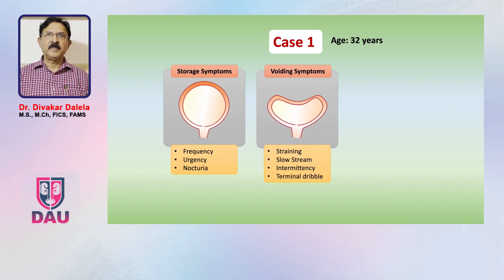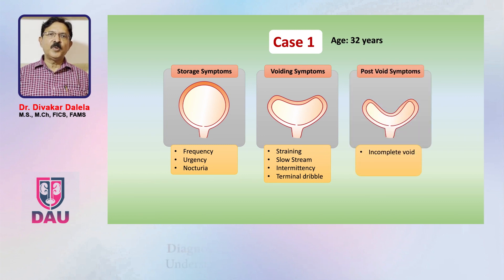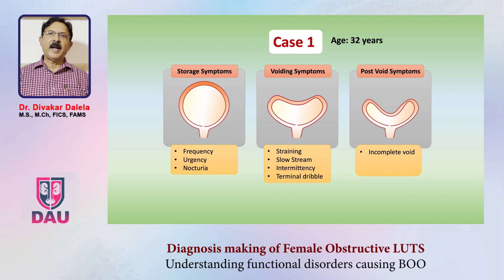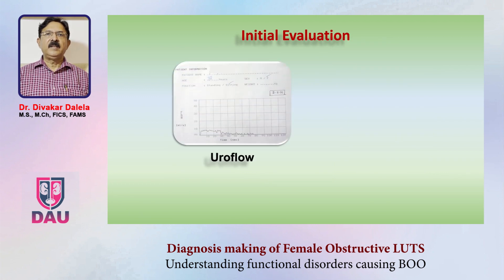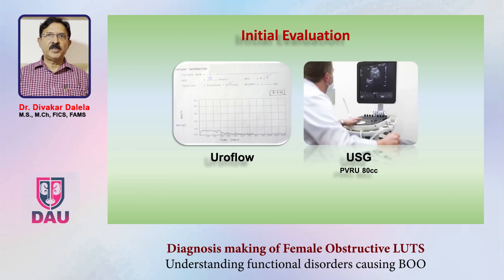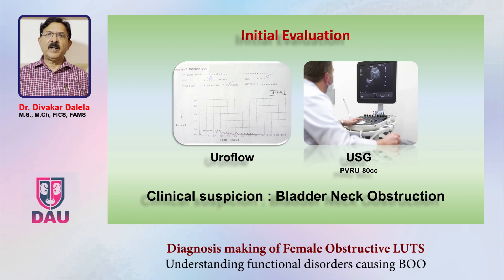Case one is a 32-year-old lady who comes with storage symptoms — frequency, urgency, nocturia — and voiding symptoms including straining, slow stream, intermittency, and terminal dribble, as well as post-void symptoms like a feeling of incomplete emptying. In the initial evaluation, uroflowmetry shows a compressive pattern with low Q-max and prolonged voiding time, and ultrasound shows a significant post-void residual urinary volume.